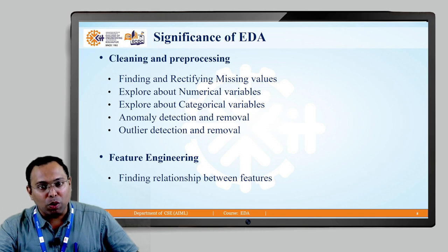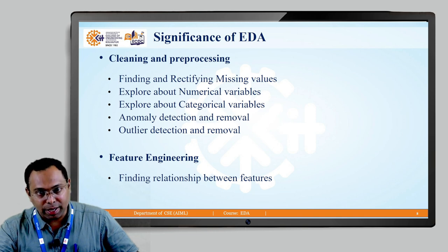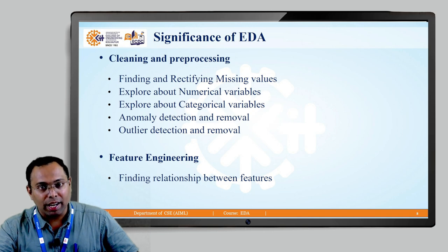The last point under cleaning is outlier detection and removal. Referring back to Unit 1, Lesson 1, I took an example using the age feature to explain outliers. If you listen to that context, you will understand what an outlier means. Using EDA techniques, you can detect outliers and then remove them. All of these cleaning and preprocessing tasks are possible with the help of EDA.